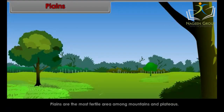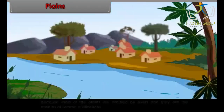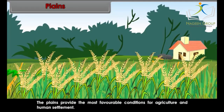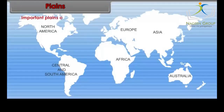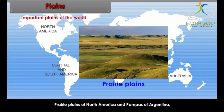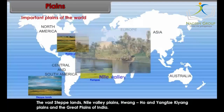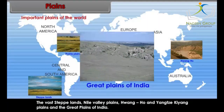Plains are the most fertile area among mountains and plateaus. Plains are more densely populated than plateaus and mountains because most plains are drained by rivers and they are the cradles of human civilizations. In the plains, soil is very fertile, which is good for cultivation. Some important plains of the world are the Prairie Plains of North America, the Pampas of Argentina, the vast steppe lands, Nile Valley Plains, Quangho and Yangtze-Kiang Plains, and the Great Plains of India.